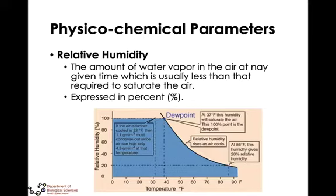We use the sling psychrometer or the digital psychrometer. In the sling psychrometer, you have the dry and the wet bulb, wherein there is a specific table for relative humidity measurement based on the measurement of dry and wet bulb.